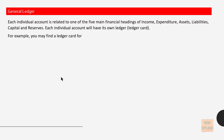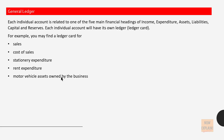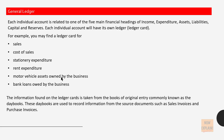For example, you may find a ledger card for sales, cost of sales, stationery expenditure, rent expenditure, motor vehicle assets owned by the business, and bank loans owed by the business. The information found on the ledger cards is taken from the books of original entry, commonly known as the daybooks.